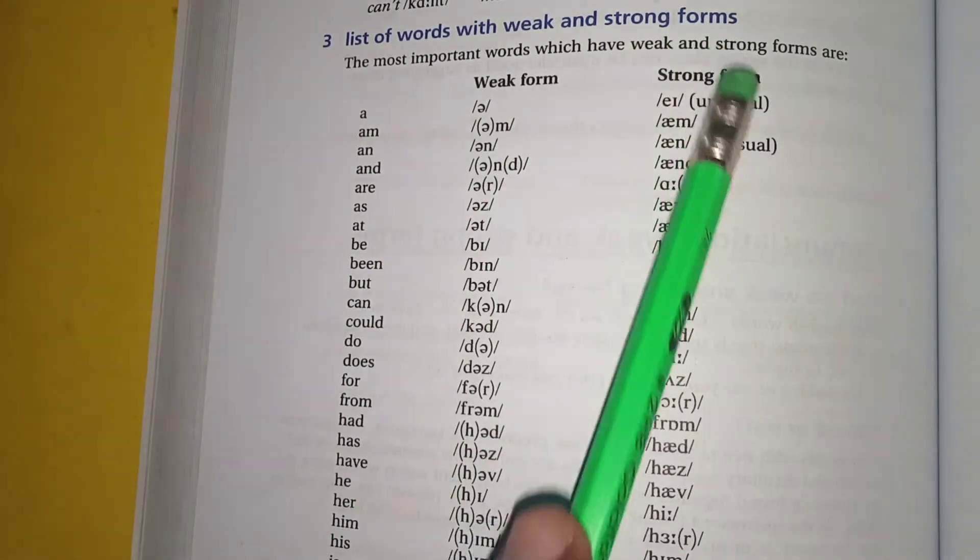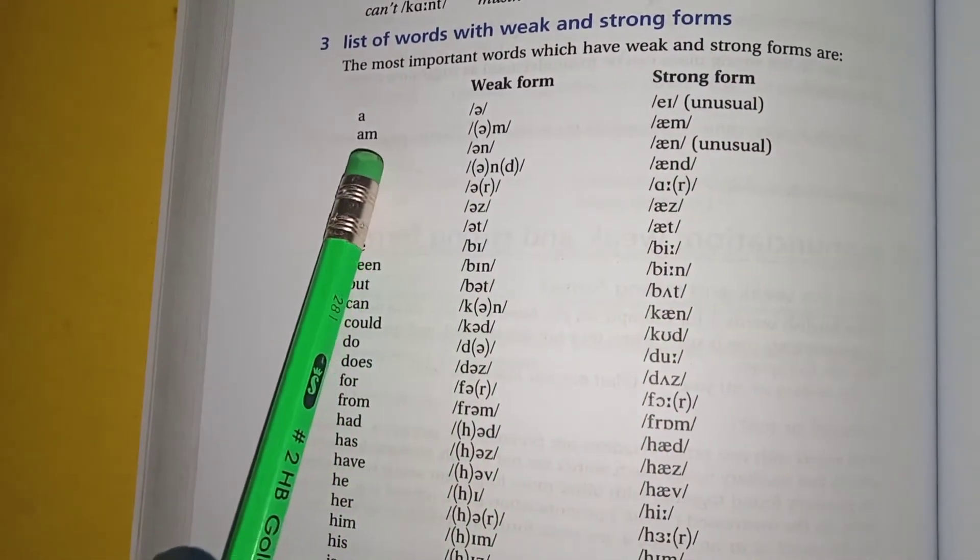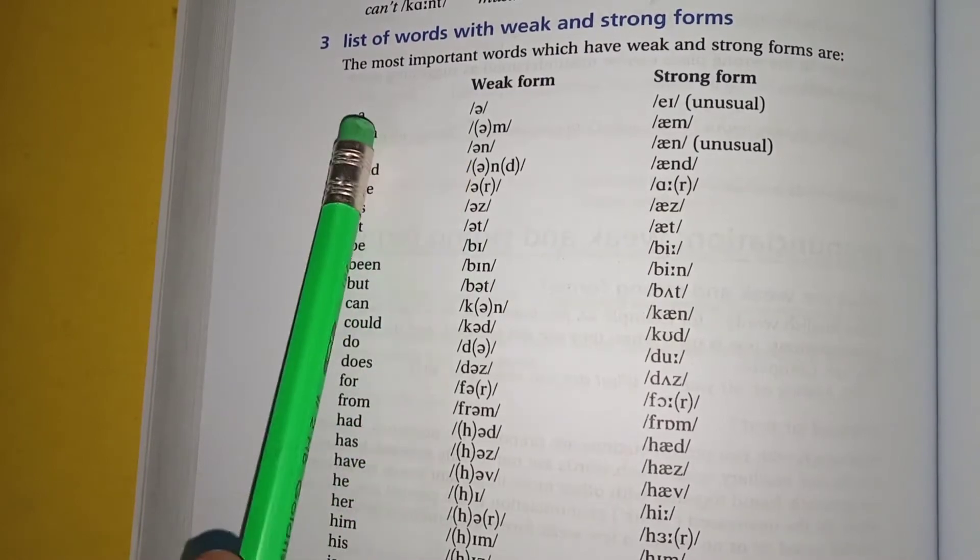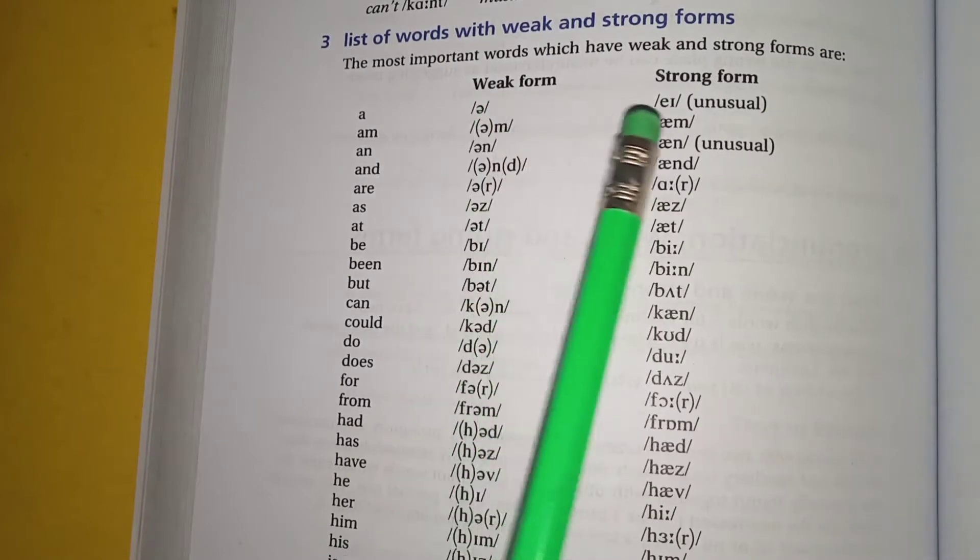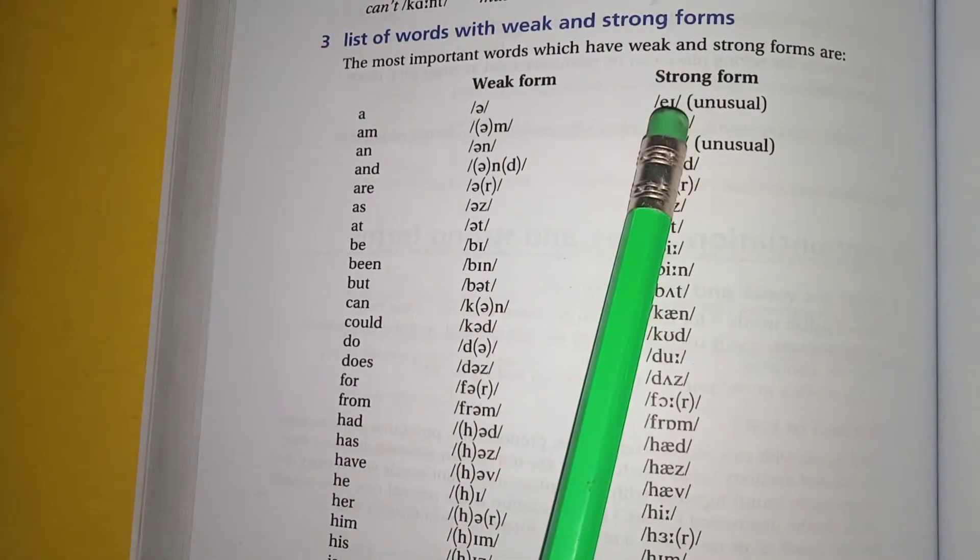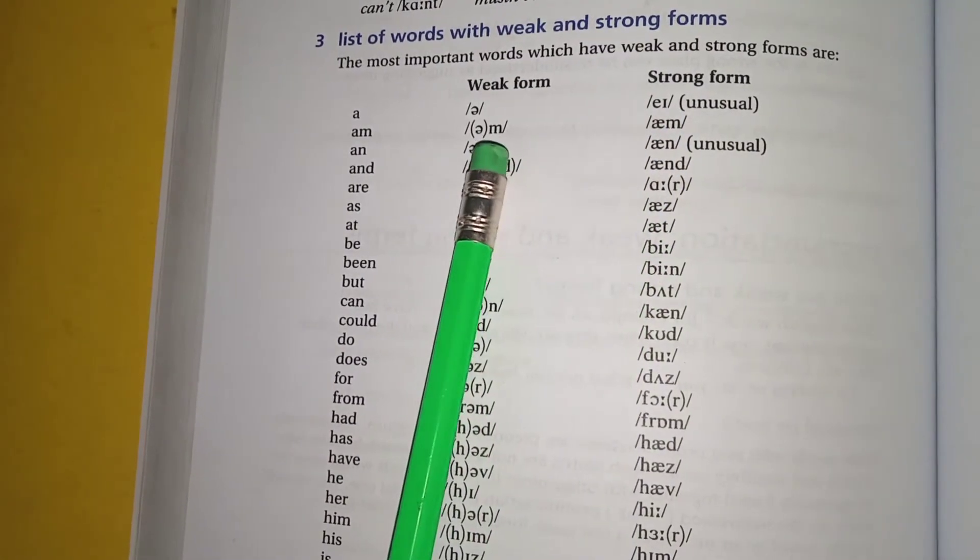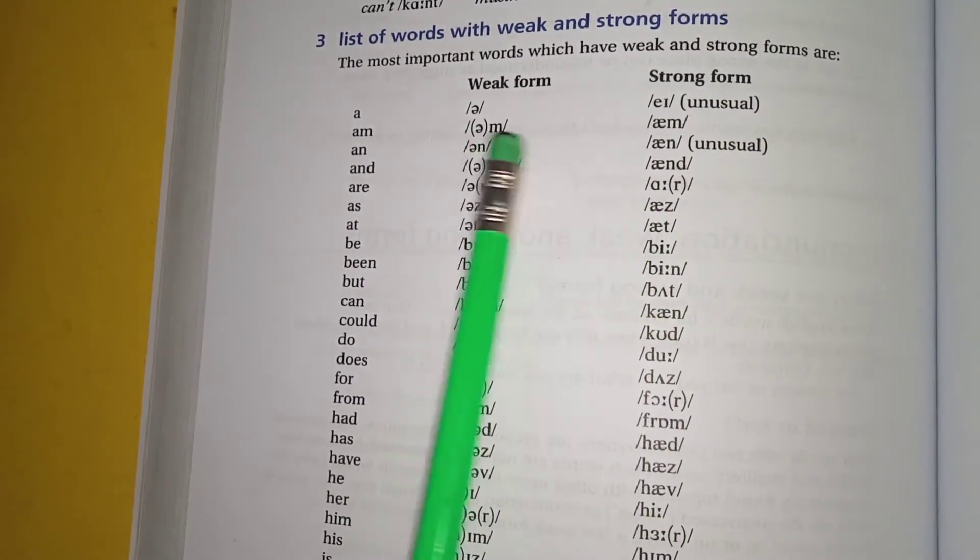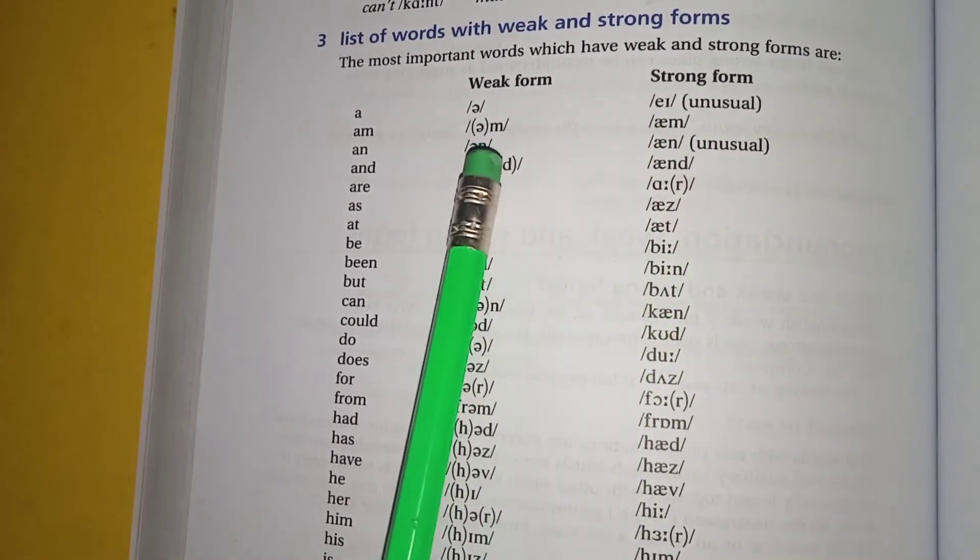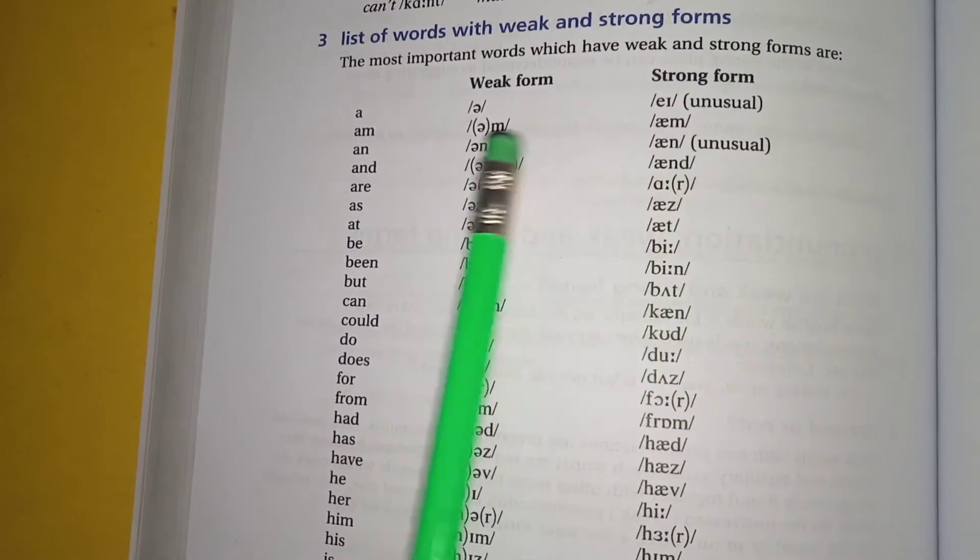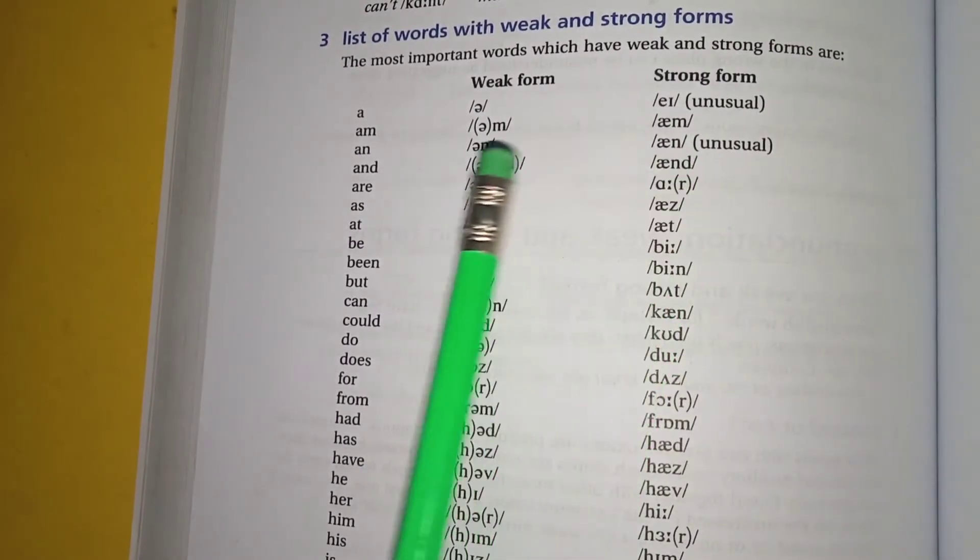Okay, so let me read this for you. This is weak form 'a', strong form 'a'. A, A, E. Am, am, am, am. An, an, an. And, and, and, and. And, and. These are phonetic symbols and these are words here.